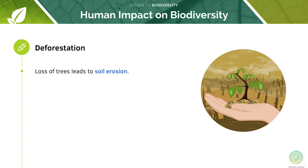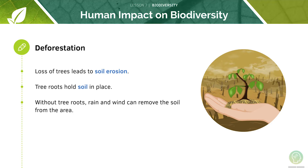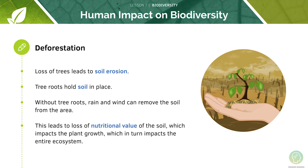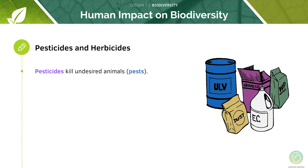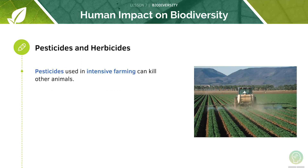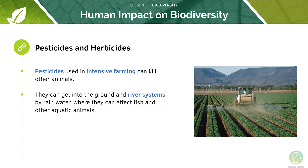A loss of trees will lead to soil erosion — the tree roots usually hold the soil in place, so without them the rain and wind will remove the soil from the area, leading to a loss in the nutritional value of the soil. Pesticides are toxic to certain organisms within the ecosystem, and can even affect animals in the water if the pesticide makes it into river systems.